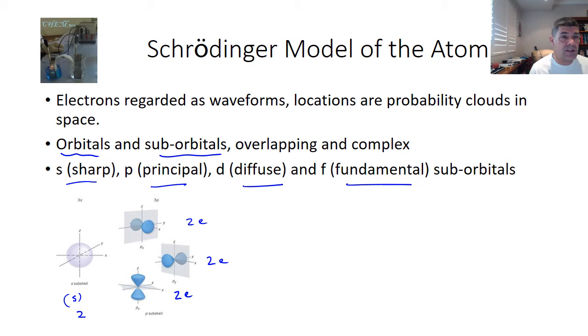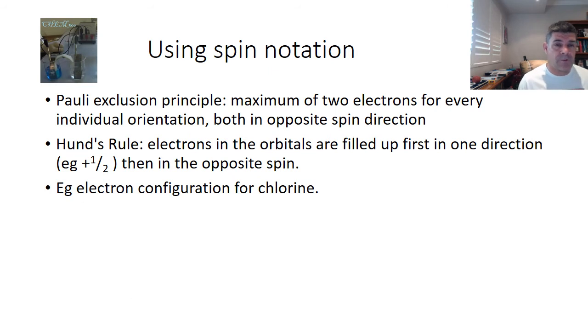The property that we need to start talking about is the property known as electron spin. What that means, effectively, is that the electrons don't tend to hang around together. They kind of do their own thing in their own spaces as much as they're able to. So there's two important things we need to remember when we're labeling these. The first thing is the Pauli exclusion principle. The Pauli exclusion principle basically tells us there's a maximum of two electrons for every individual orientation, both in opposite spin directions.